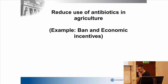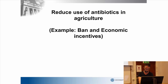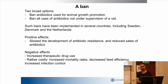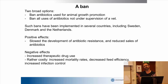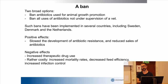The second topic is looking at agriculture — how can we reduce the use of antibiotics in agriculture? I'm going to talk about two different solutions. The first one is that we could simply ban the use of antibiotics for animal growth promotion. Or another option would be to ban all uses of antibiotics that are not under the supervision of a veterinarian. Both of these policies have been implemented in different countries in Europe, for example in Sweden, Denmark, and the Netherlands.